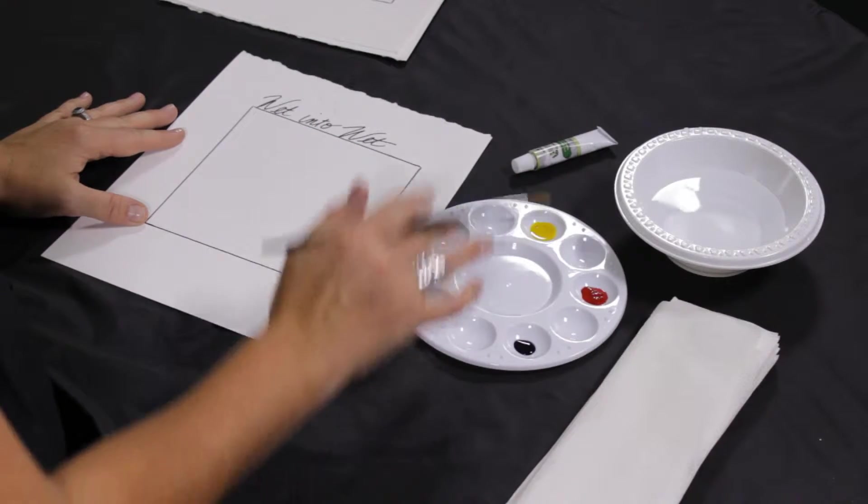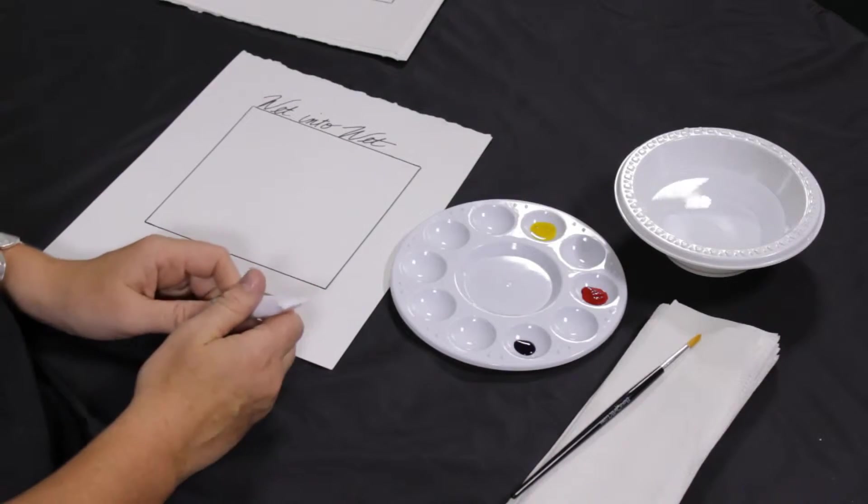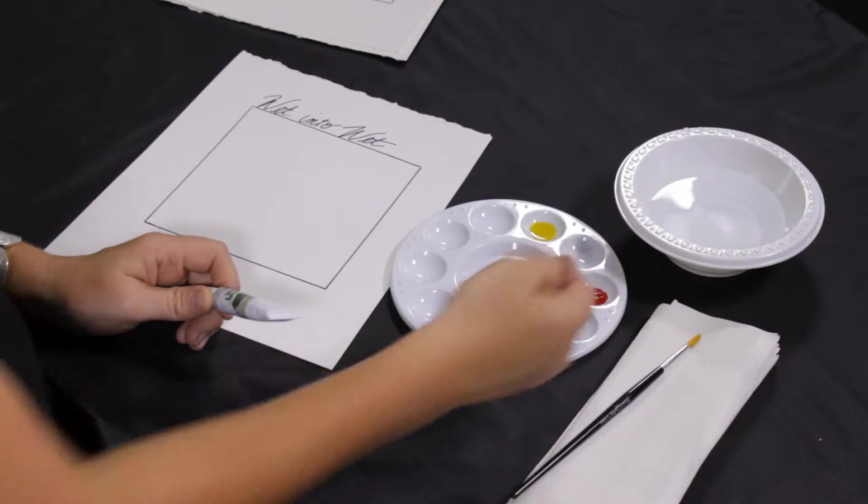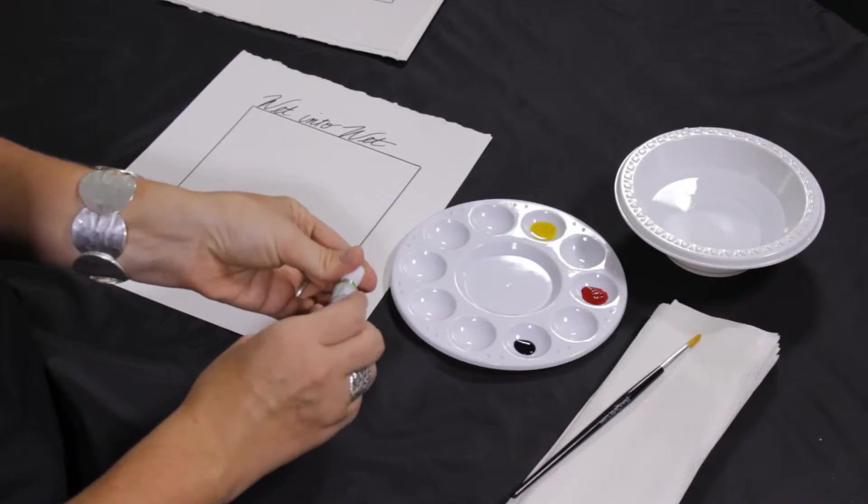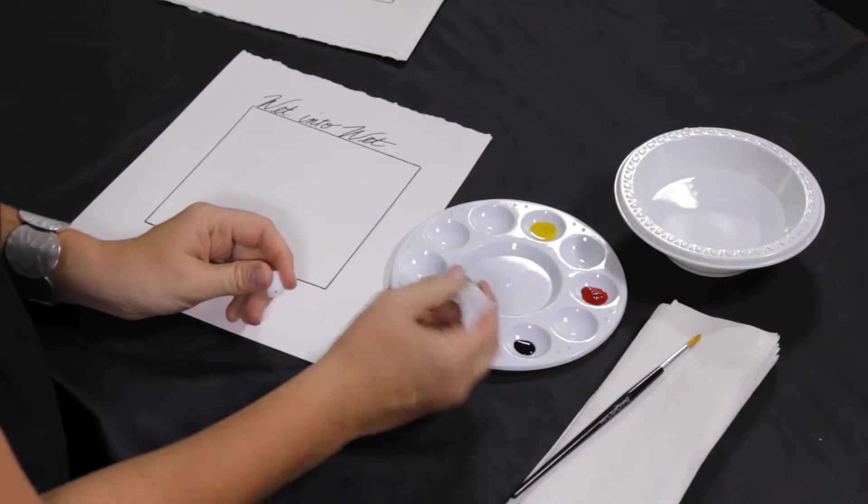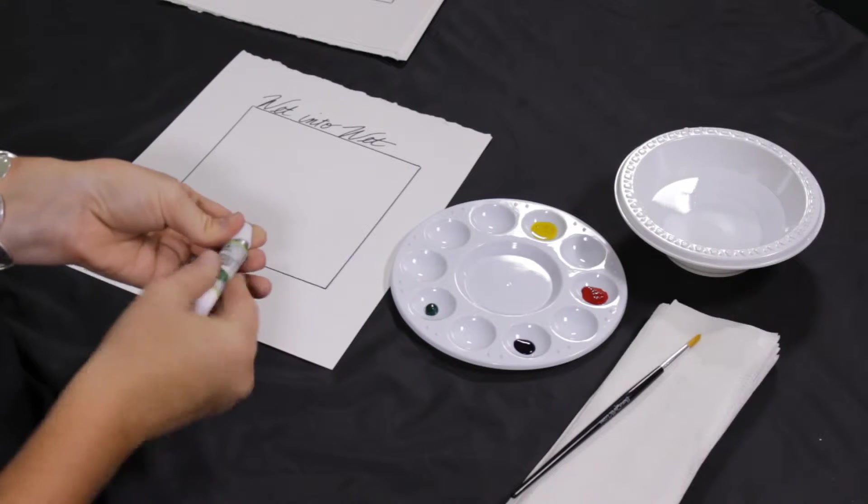Next thing you want to do is to take the paint from the tubes out and put them into the wells. I like to skip a space if I have enough room for it. I like to leave one in between. Basically you're just going to open up the tube like that and squeeze out a little bit. You don't need a lot of watercolor paint because it's going to be diluted.